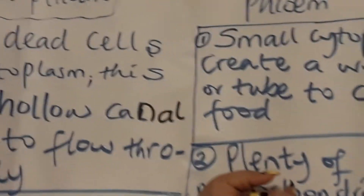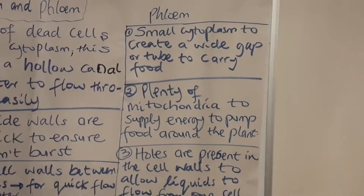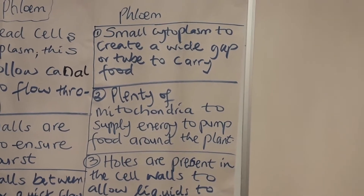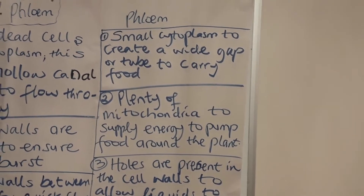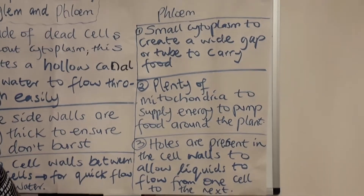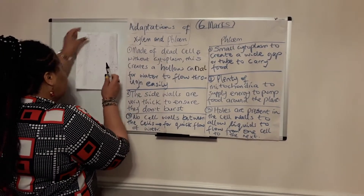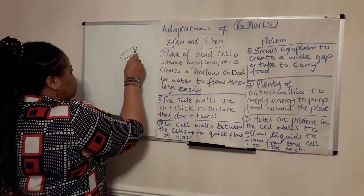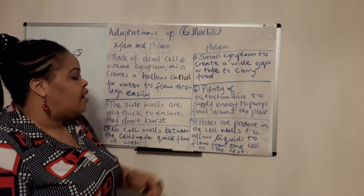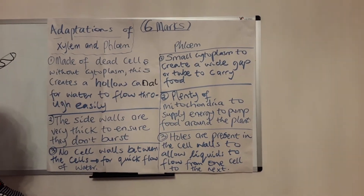Now to the phloem vessel. Phloem cells have small cytoplasm to create a wide gap or tube to carry food. They have plenty of mitochondria. Mitochondria is commonly referred to as the powerhouse because that's the site for respiration — breaking down glucose to release energy. Any cell in biology that's got a good supply of mitochondria means it needs a lot of energy. Phloem have a good supply of mitochondria, which supplies them with energy to pump food around the plant.